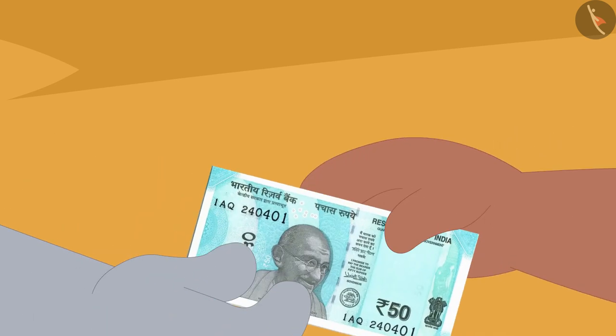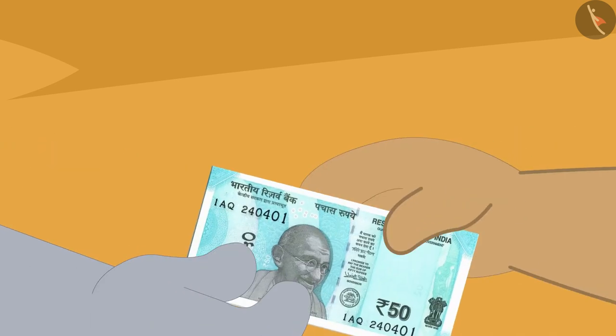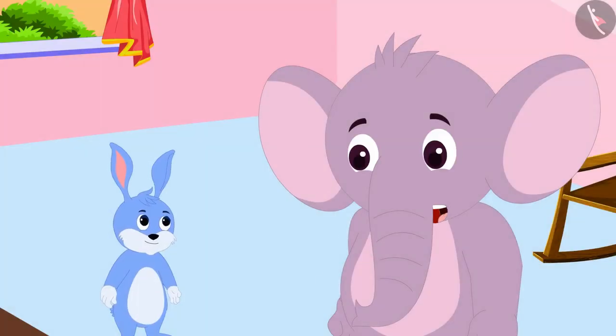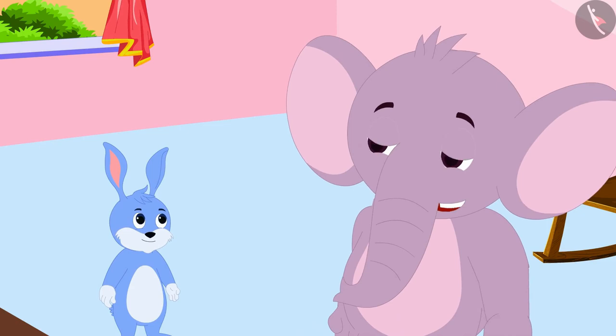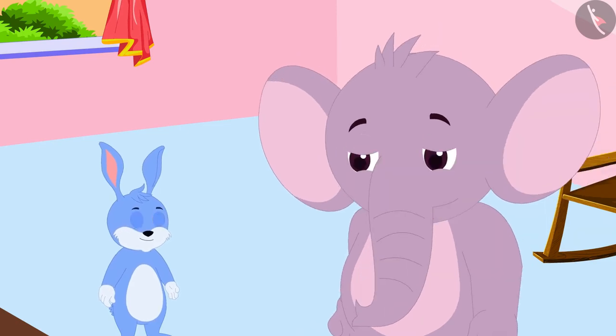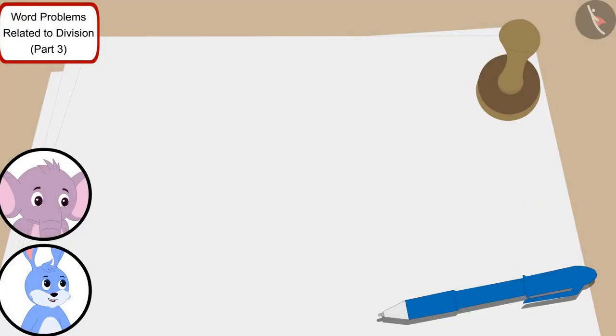Bunny, can you tell how many villagers will we be able to distribute this reward to? Appu asked Bunny. This is very easy, we just have to divide 7555 by 50, Bunny told Appu.